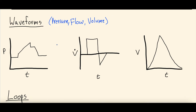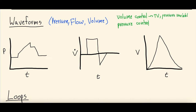The waveforms will actually look different depending on whether the patient is on volume control ventilation versus pressure control ventilation. Volume control ventilation essentially means you've set a tidal volume — the pressure is then the variable that will change based on the tidal volume you set. Whereas in pressure control, you set the pressure and the tidal volume is the variable that will change. So you're controlling the volume in volume control, and controlling the pressure in pressure control.